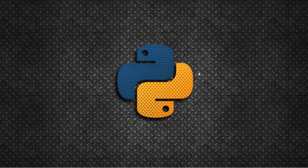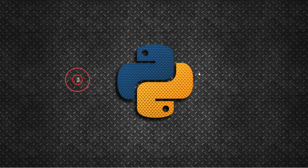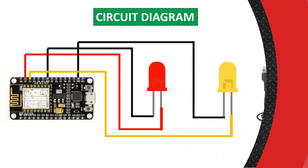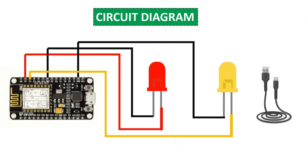Let's see how we connect them and what the circuit diagram looks like. This is a simple circuit diagram for connecting the NodeMCU and the LEDs. You can see here this is one NodeMCU, and I'm going to connect the red and the yellow LED. It's very simple.